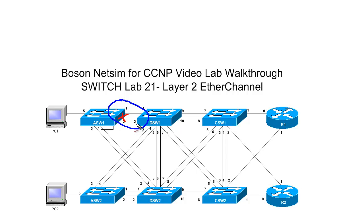Now that other link is still there — it's still an alternative path in case something happens to the active link up here, but under normal operation of the network, only this link at the top is going to be carrying traffic. If the cable is broken for some reason, spanning tree will recalculate the topology and activate the link down here at the bottom. So even though we've got two links, we'll only use one or the other at any given point in time, which is why we say that we give up half of our bandwidth even though we have redundancy.